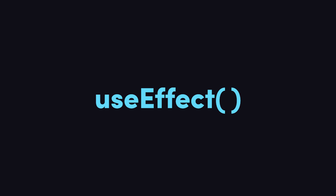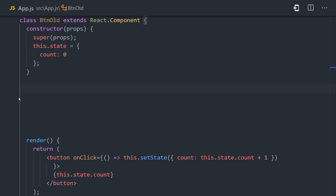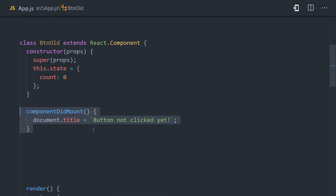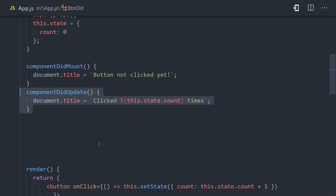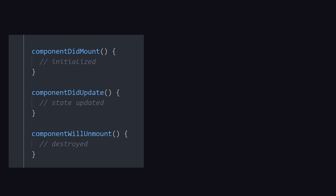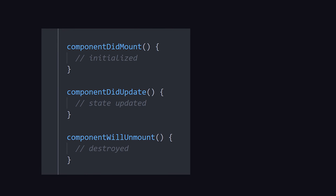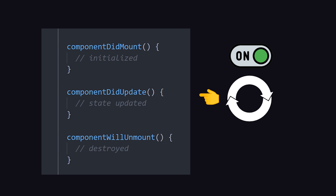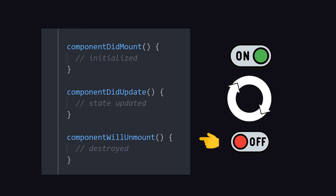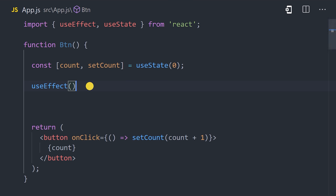Now we're ready to tackle the second most important hook — useEffect — which also happens to be one of the most confusing. To understand it, you first need to understand the component lifecycle. In the old class component, we implement methods to handle different lifecycle events. Here's a simplified breakdown: the component is added to the UI, or mounted, which can only happen once; then reactive data can change, or it's updated, which can happen multiple times; and finally, the component will be removed from the UI, or unmounted.